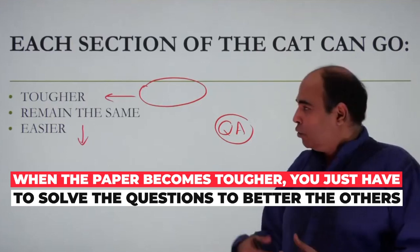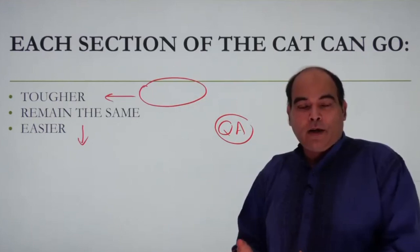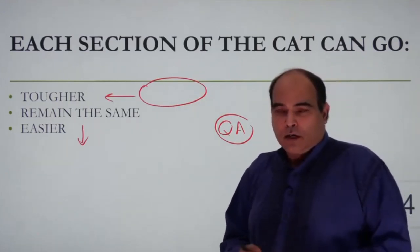For example, 26 questions—the paper was very tough. I solved 18, you could solve only 12. I'm better than you because I could solve more questions, and it's not just about speed.